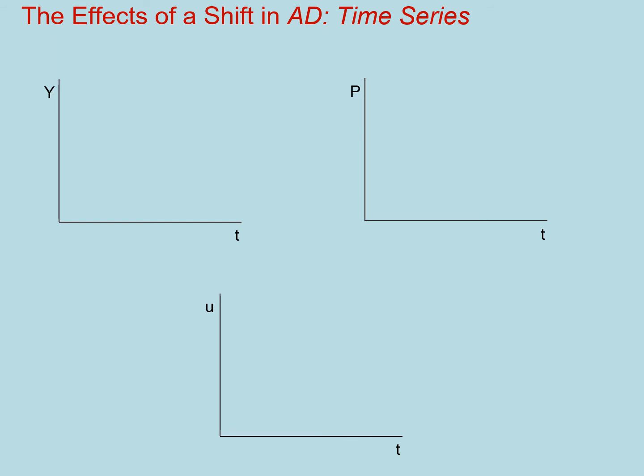So let's think about how output, prices, and the unemployment rate are going to move around in a time series format. Let's start with output. And let's say that the time before the event has happened is equal to time 1. So at time 1, the stock market crashes. Before then, the economy was at the natural level of output.